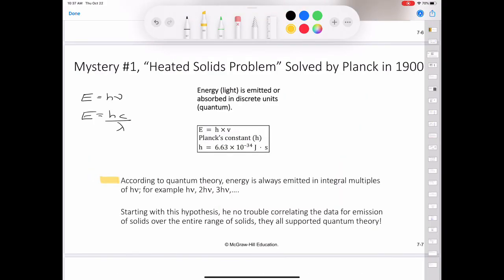According to quantum theory, energy is always emitted in integral multiples of H times nu. For example, H nu, 2 times H nu, 3 times H nu, etc. But never, for example, 1.67 times H nu or 4.98 times H nu. At the time Planck presented his theory, he could not explain why energies should be fixed or quantized in this manner. Starting with the hypothesis, however, he had no trouble correlating the experimental data for the emission by solids over the entire range of wavelengths. They all supported quantum theory.